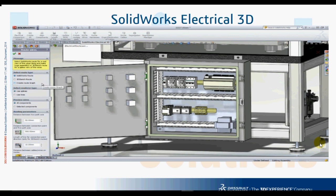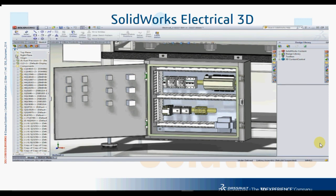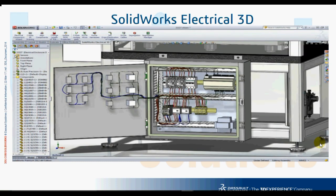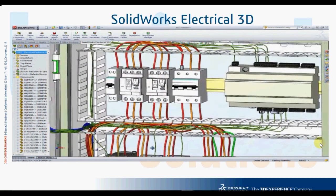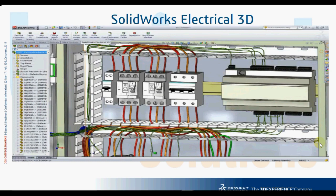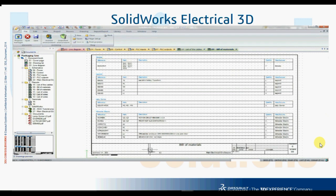SOLIDWORKS ELECTRICAL 3D even allows you to automatically and almost instantly wire your electrical panel. This helps ensure that everything will fit correctly, optimize the panel wiring, and accurately calculate the necessary wire and cable lengths long before your final product reaches production. With minimal effort, the wires are properly routed inside the ducts using the properties, color, and diameter specified in the 2D schematic, offering a stunning and realistic result.